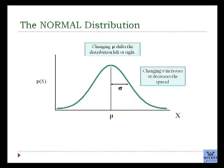As mu changes, the distribution shifts to the left or the right. As sigma changes, the shape of the distribution goes from less variable, which is more narrow, to more variable, which is wider.